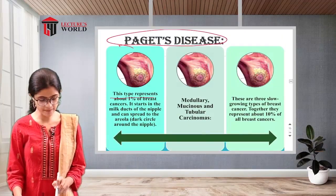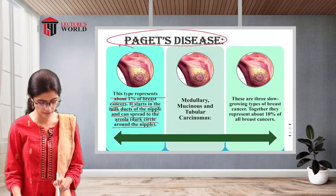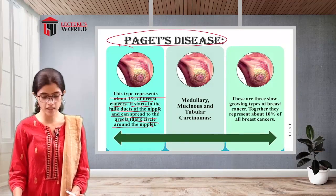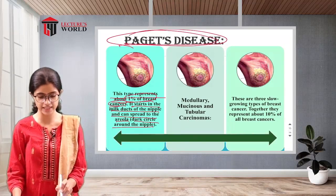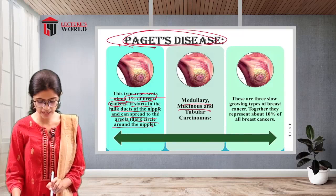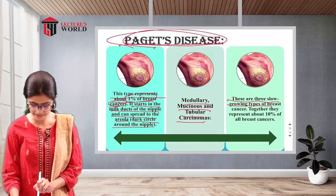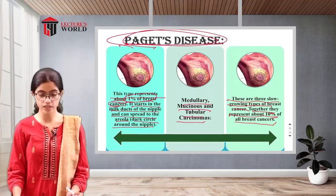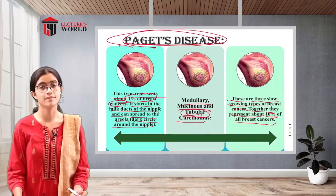Paget's disease represents about 1% of breast cancer. It starts in the milk ducts of the nipple and can spread to the areola — the darker area around the nipple. The medullary, mucinous, and tubular carcinomas are three slow-growing types of breast cancer that together represent about 10% of all breast cancers.